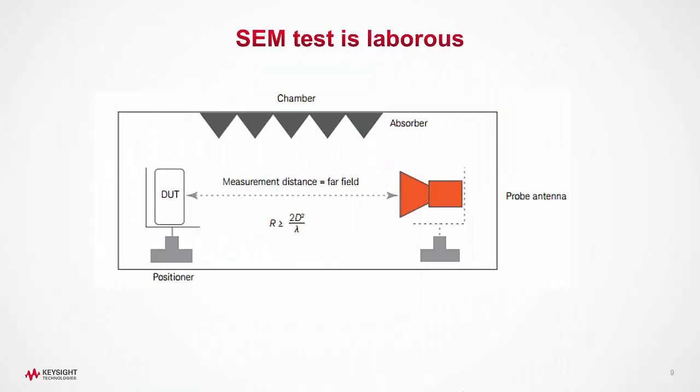The SEM test is conducted over the entire sphere or 4π solid angle for all the desired beam directions in both azimuth and elevation. This very laborious procedure will be repeated if the spurious emissions are found for the first time in the chamber and then they have to be corrected in the design and brought back to the chamber again.